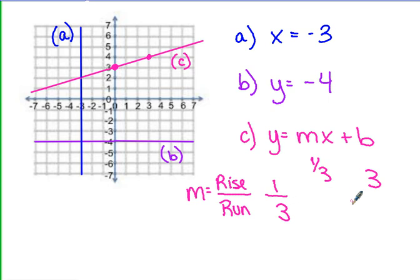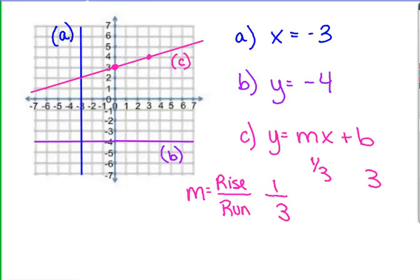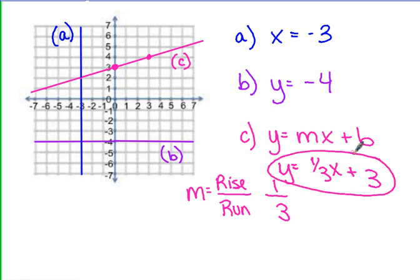The final thing we need to determine is whether the slope is negative or positive. If the line moves uphill from left to right, it's positive; if it moves downhill from left to right, it's negative. This line is moving uphill from left to right, therefore it has a positive slope. Plugging in our y and our x, the equation of line c is y equals one-third x plus three.